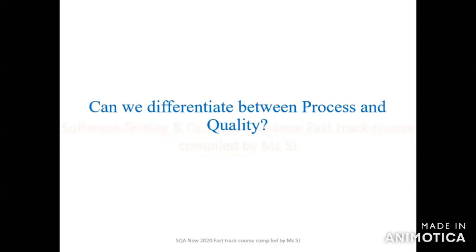Can we differentiate between process and quality? Yes, obviously we can. Process is divided into different steps and it is continuous — it is a category in which we are continually doing something. For example, when we talk about software processes, there must be some stages, and in those stages we complete different rules and different principles.